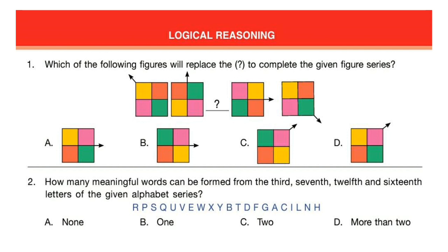Question 2: How many meaningful words can be formed from the 3rd, 7th, 12th and 16th letter of the given alphabet series? Correct answer is option D.